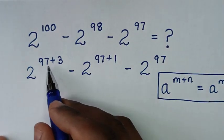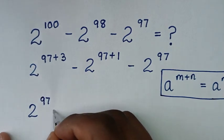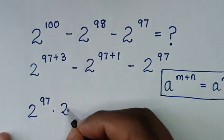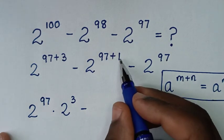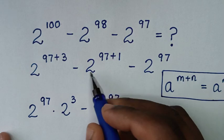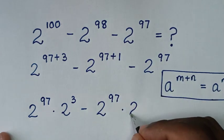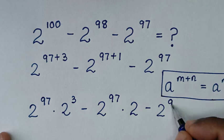Then here 2 power of 97 plus 3 is same as 2 power of 97 times 2 power of 3. Then minus 2 power of 97 plus 1 is same as 2 power of 97 times 2 power of 1 which is 2. Then minus this exponent 2 power of 97.